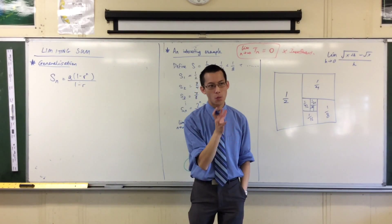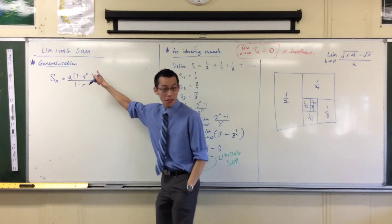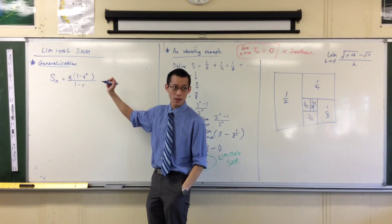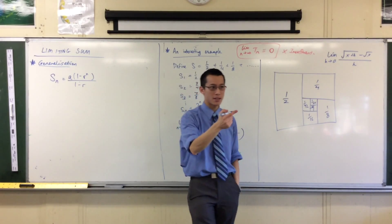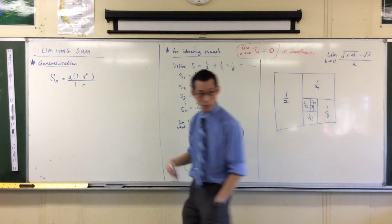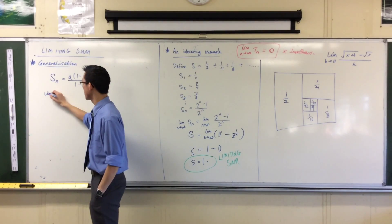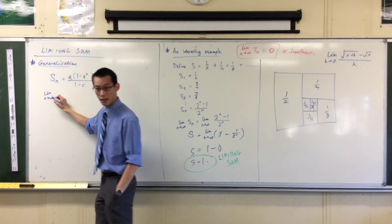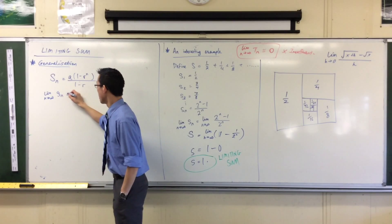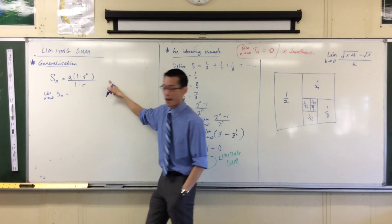Now, what is S, the limiting sum? It's not this. This is the partial sum. The limiting sum is, good, so I'm going to take that limit. So let's go, limit as n approaches infinity of this must be the limit as n approaches infinity of that.